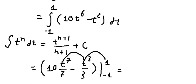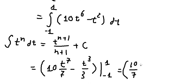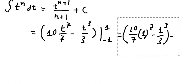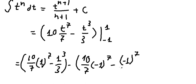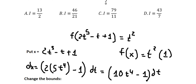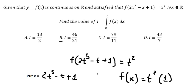We put 1 in here and negative 1 in here and calculate. The result is 46 over 21, and that is answer B. This is the end — thank you for watching.